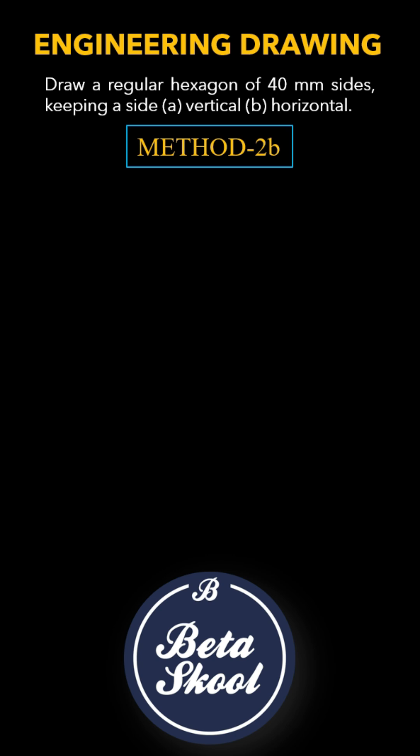The question reads like this: Draw a regular hexagon of 40mm sides, keeping a side vertical or horizontal. You can watch the procedure for Part A of the question by clicking the link below in the video description. Here we will discuss the method for Part B.